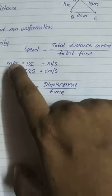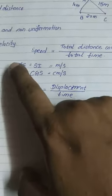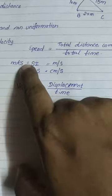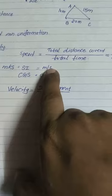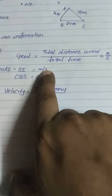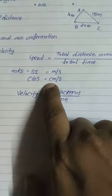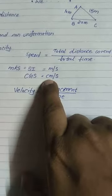There are two systems to measure the unit: MKS and CGS. MKS stands for meter, kilogram, and second. CGS stands for centimeter, gram, and second. The SI unit of speed is meter per second, and the CGS unit of speed is centimeter per second.